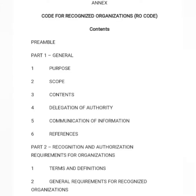I hope you can clearly see this. So this is what the content page of the RO code looks like. There is part one, which is general, which is divided into six sections. And these six sections together give you the information about this particular code — its purpose, scope, contents, delegation of authority, communication of information, and other references related to the code.